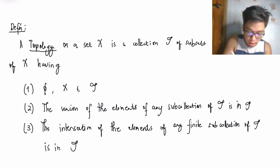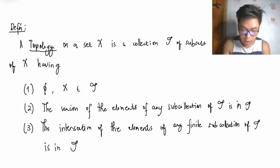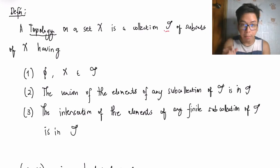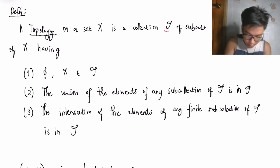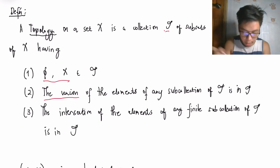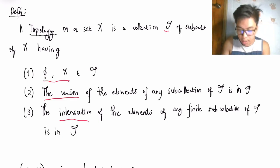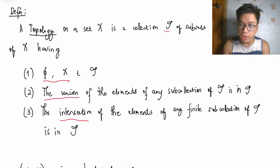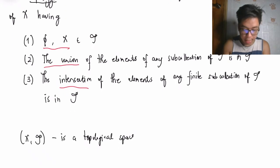A topology on a set X is a collection tau of subsets of X having the following properties: (1) the empty set and X itself are in tau; (2) the union of the elements of any sub-collection of tau is in tau; and (3) the intersection of the elements of any finite sub-collection of tau is also in tau. These are the requirements to declare a certain collection a topology.